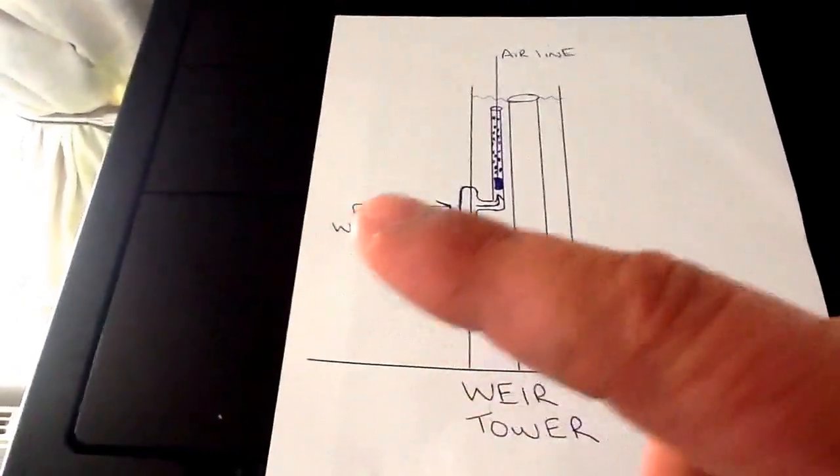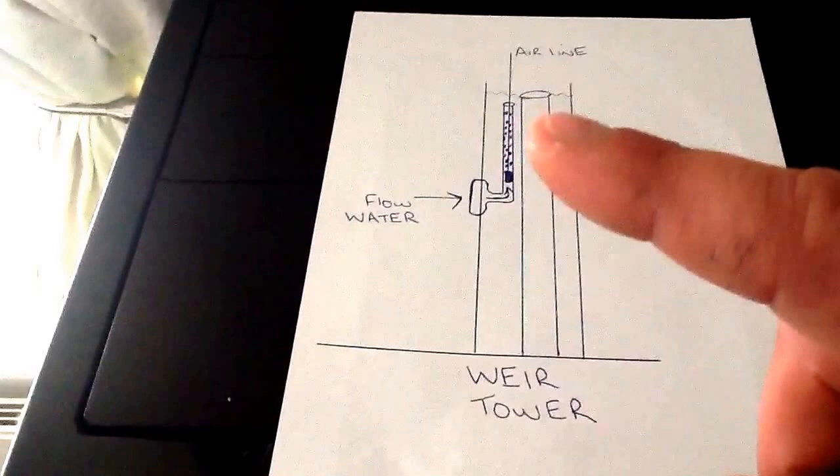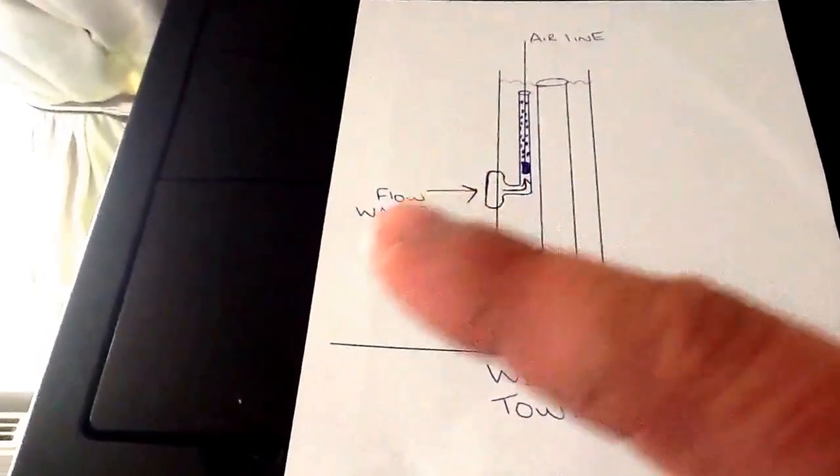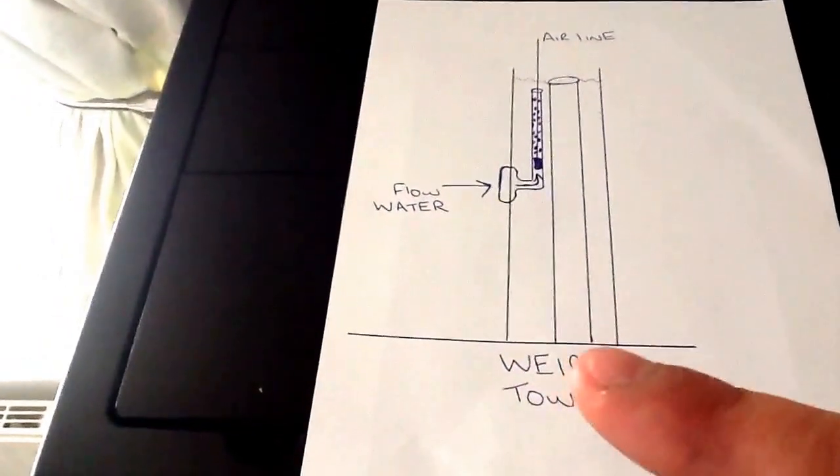So all the water will be moving through, up, and obviously all the debris and then it'll drop straight over the edge and down the weir. So that's creating good circulation in the tank at low flow.